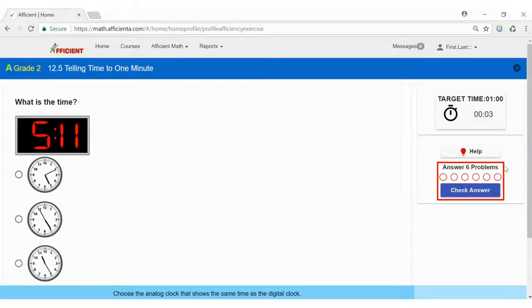Efficiency rounds are also six questions and the skills are chosen from the current grade with the last few specifically selected based on skills you need to improve on the most. Treat efficiency as you would a final exam in school.